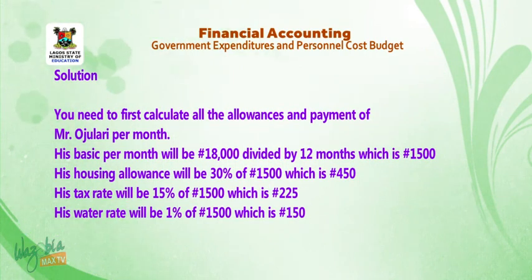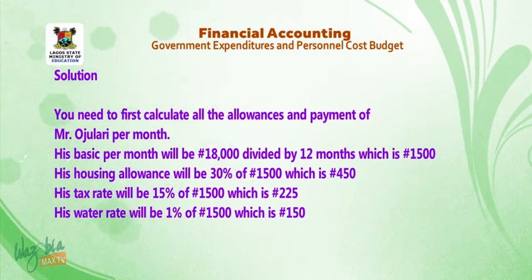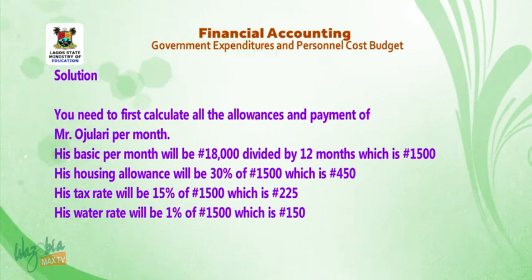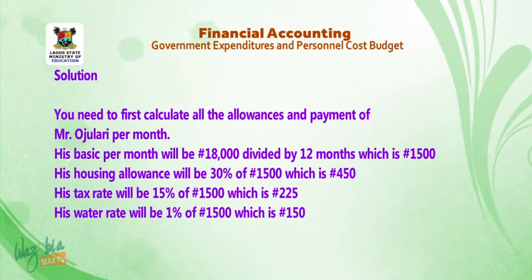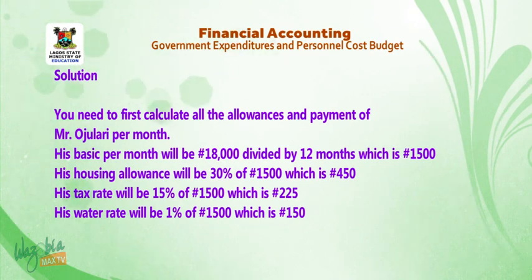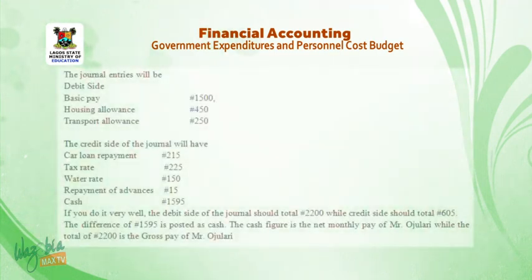Solution. First, calculate all the allowances and deductions for Mr. Ojolari per month. His basic pay per month will be 18,000 Naira divided by 12 months, which is 1,500 Naira. His housing allowance will be 30% of 1,500 Naira, which is 450 Naira. His tax will be 15% of 1,500 Naira, which is 225 Naira. His water rate will be 1% of 1,500 Naira.